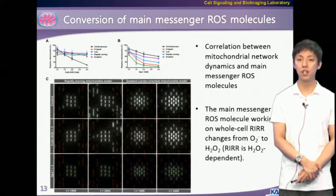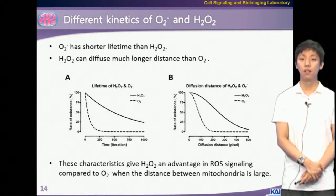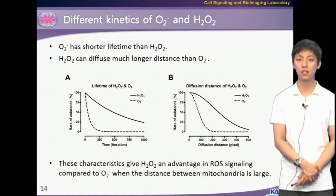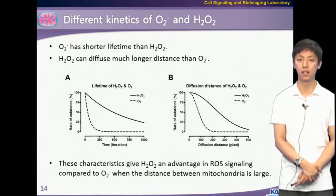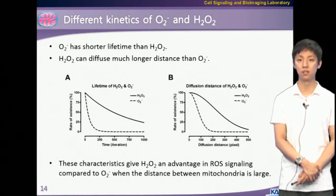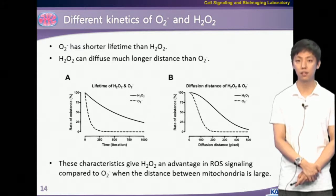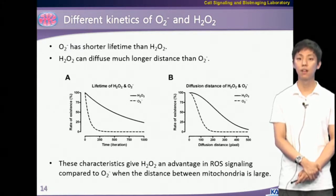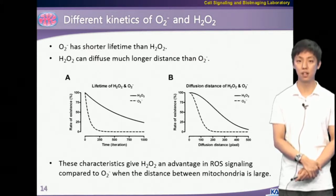Captured images of the real simulation clearly showed how each antioxidant prevents ROS propagation. The reason why the main messenger ROS molecules are altered by the conditions affecting mitochondrial network dynamics is the different kinetics of the two ROS types, superoxide and hydrogen peroxide. From many parameters used in our model, the lifetime of each ROS molecule in the cytosol is calculated, allowing estimation of the average distance that each ROS molecule can travel in the cytosol by random diffusion. As shown in the graph, superoxide has a shorter lifetime than hydrogen peroxide and therefore hydrogen peroxide can travel much farther in the cytosol. This characteristic gave hydrogen peroxide an advantage in ROS signaling compared to superoxide when the distance between mitochondria is large.